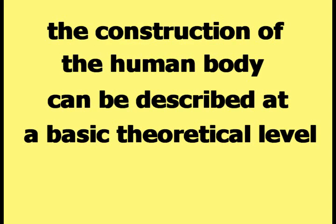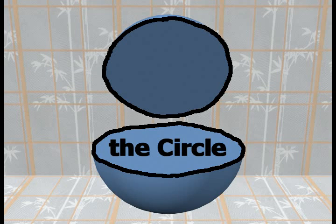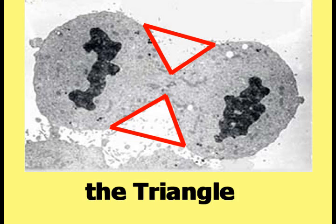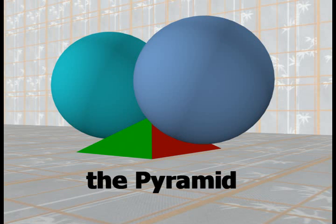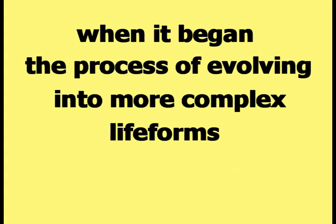To summarize, the construction of the human body can be described at a basic theoretical level by the sphere, the circle, the spiral, the triangle, and the pyramid — for the simple reason that those were the shapes available to the single cell floating in the ocean when it began the process of evolving into more complex life forms.